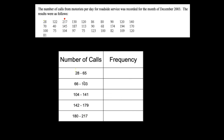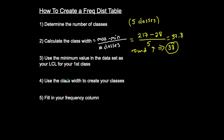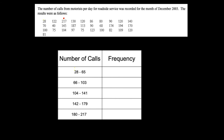So to summarize: the lower class limits are 28, 66, 104, 142, 180 and the upper class limits are 65, 103, 141, 179, 217. Just for practice, let's also find the class midpoints. For the first class: 65 plus 28 divided by 2 is 46.5. Then I add the class width of 38 to get each subsequent midpoint: 84.5, 122.5, 160.5, 198.5. I'll verify the last one: 217 plus 180 divided by 2 is 198.5 — matching beautifully.